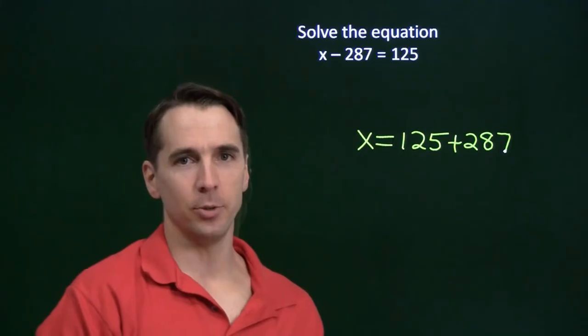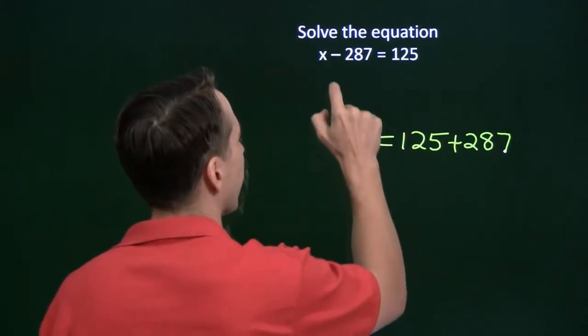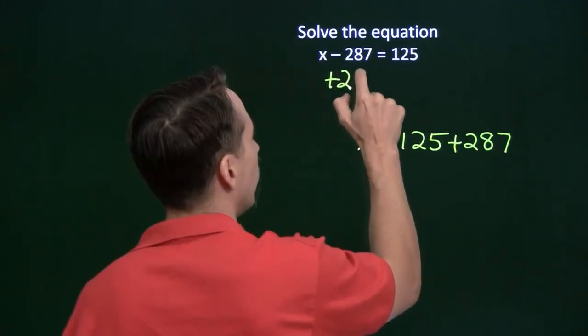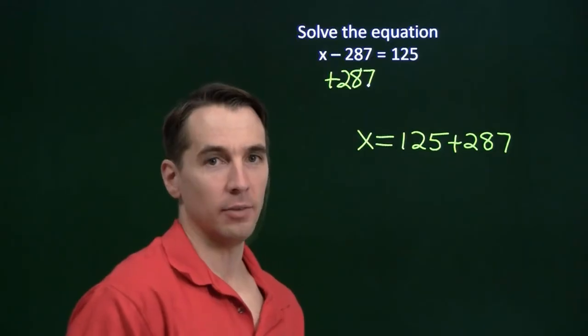X is being driven nuts by this 287. X wants to be alone. We're going to help x. And we're going to get x alone by adding 287, because that will cancel out the minus 287 there.